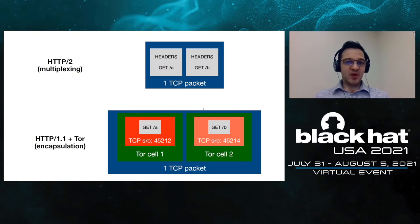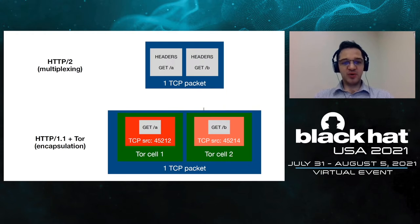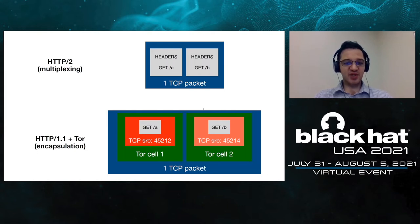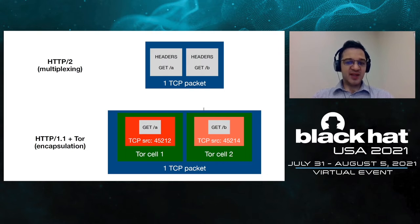With multiplexing, two HTTP requests shown in gray can be placed into a single TCP packet shown in blue. For HTTP/1 over Tor targeting an onion service, each HTTP/1 request is placed in a separate TCP packet, which is then wrapped in a separate Tor cell packet. The adversary ensures these two Tor cells are aggregated into one single TCP packet, so when that packet arrives at the server, both HTTP/1 requests are effectively processed at the same time.